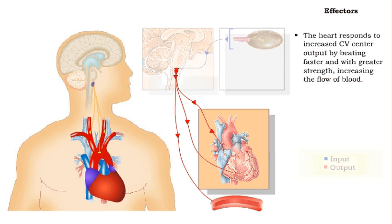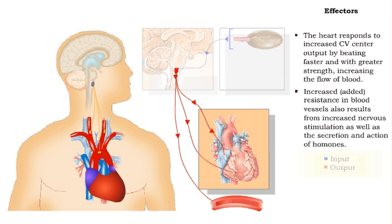The heart starts to beat faster, sending blood to the arteries at a faster rate. It also beats with greater strength, sending greater amounts of blood to the arteries with each beat. The nervous signals from the brain also signal secretion of hormones that constrict blood vessels, increasing their resistance.